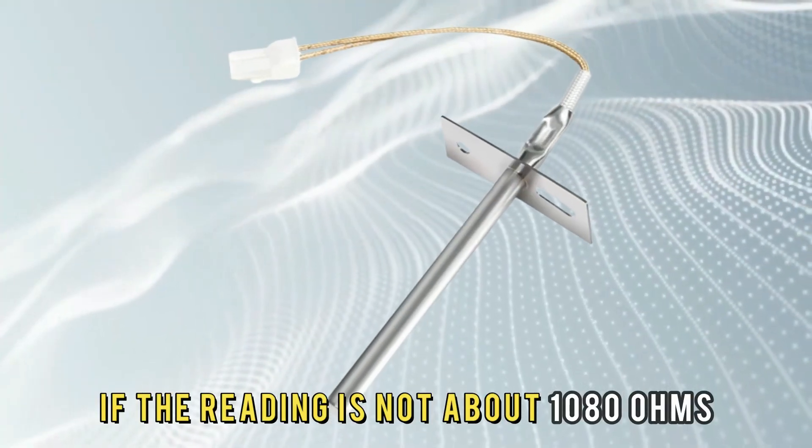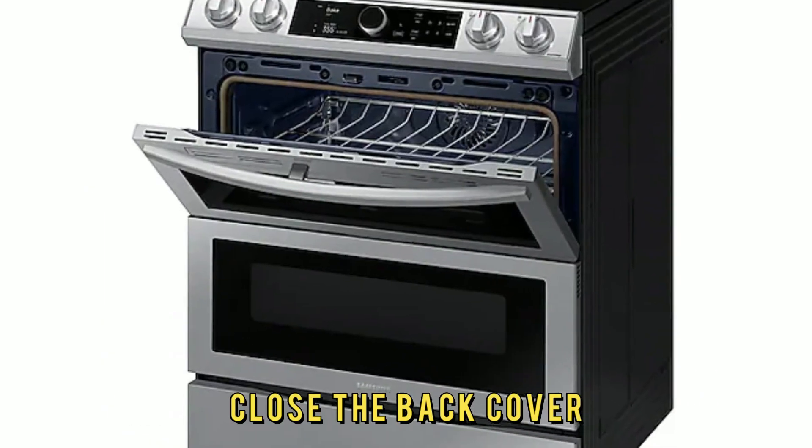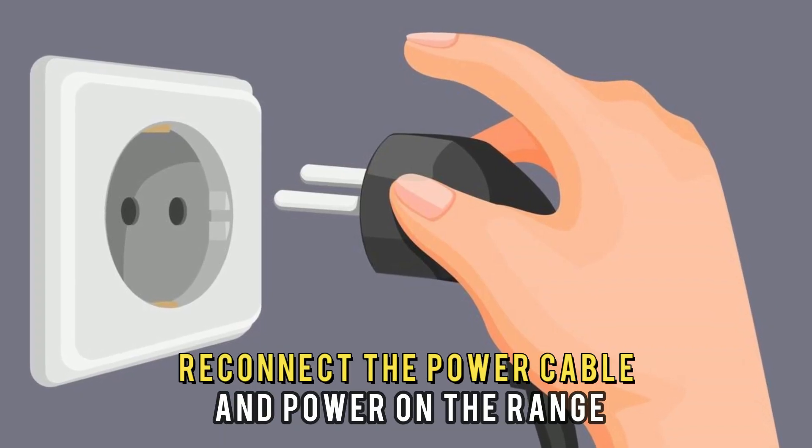If the reading is not about 1080 ohms, replace the sensor with a new one. Close the back cover. Reconnect the power cable and power on the range.